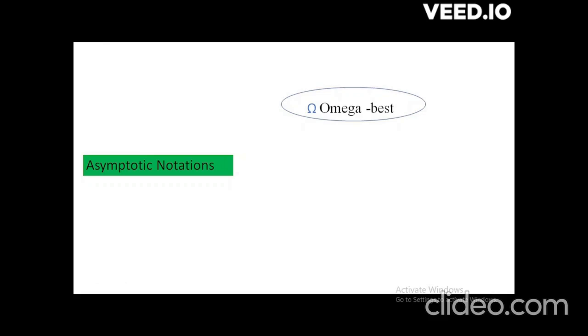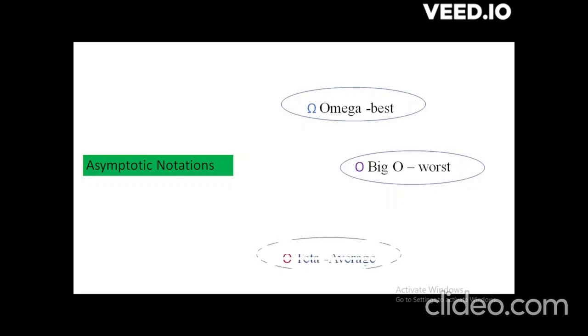The very first is Omega. This represents the best case — the minimum amount of time that the algorithm will take to run on the given input. Then worst case: for worst case we use Big O notation, which tells you the maximum amount of time that the algorithm might take to run on the given input. Theta gives you a time bound between your best and worst case.